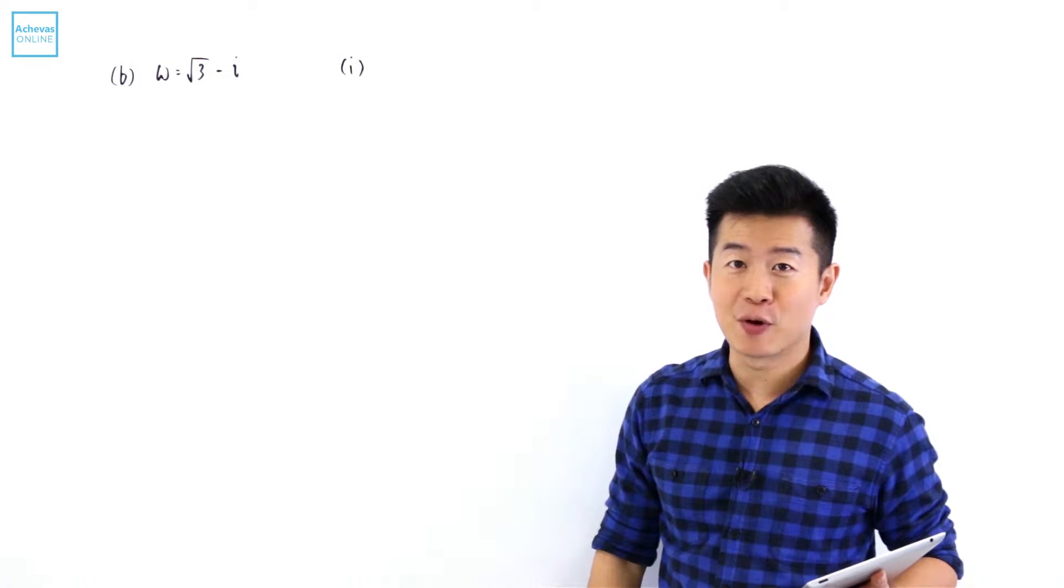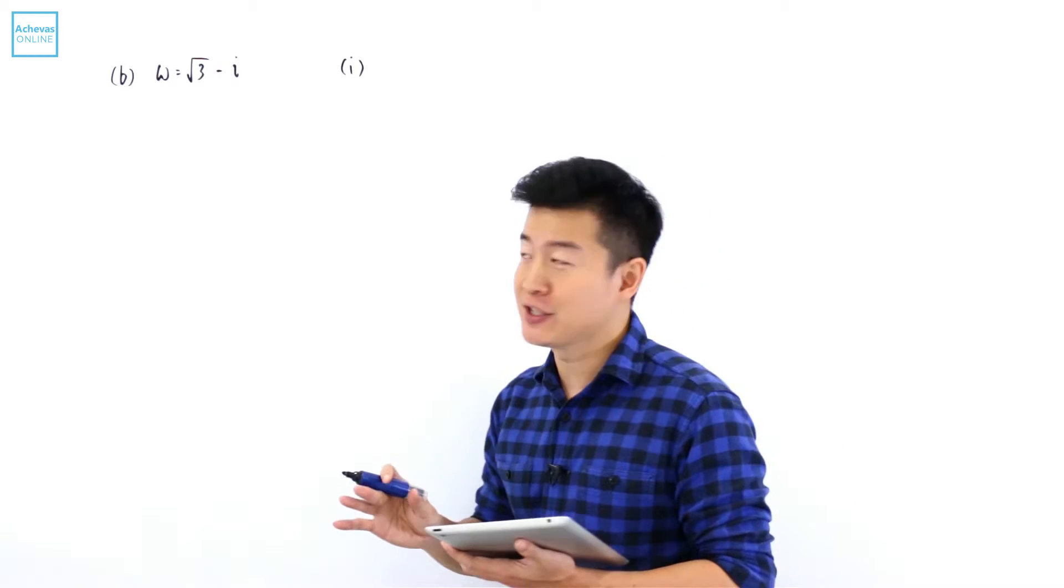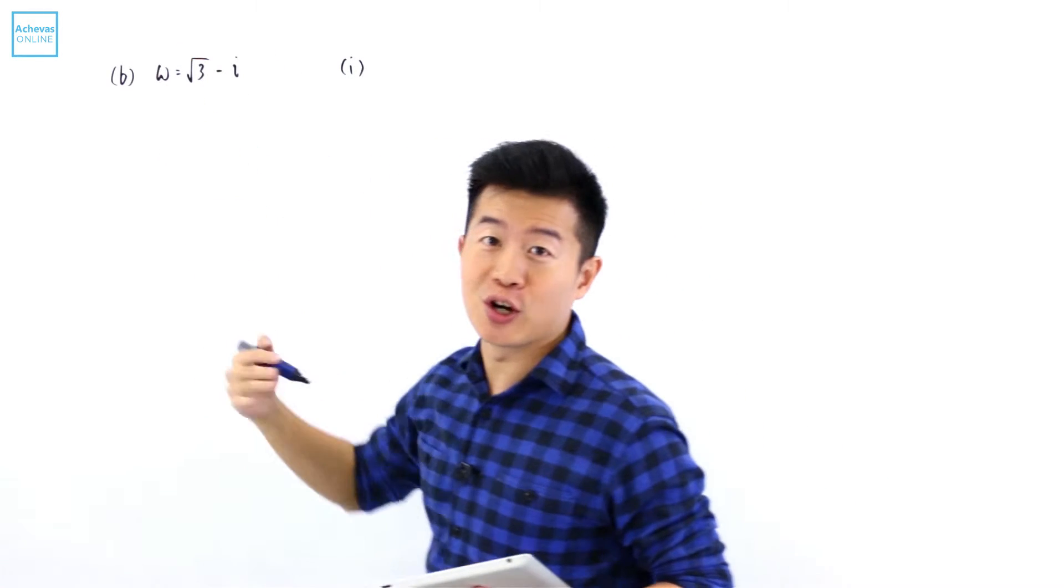To find w to the power of 6 in the form of r e to the power of i theta, I'm going to make use of De Moivre's theorem, which means that I'm going to change this first of all into the Euler form.